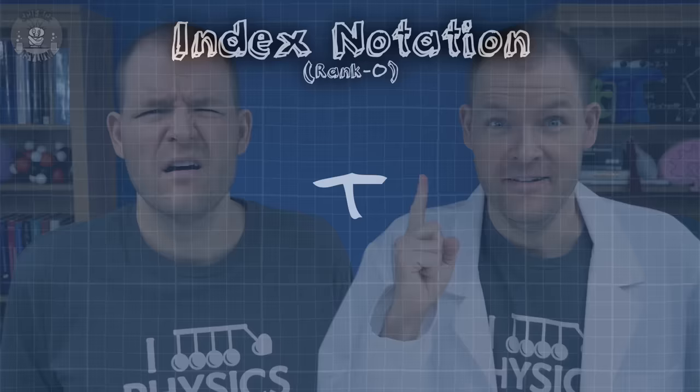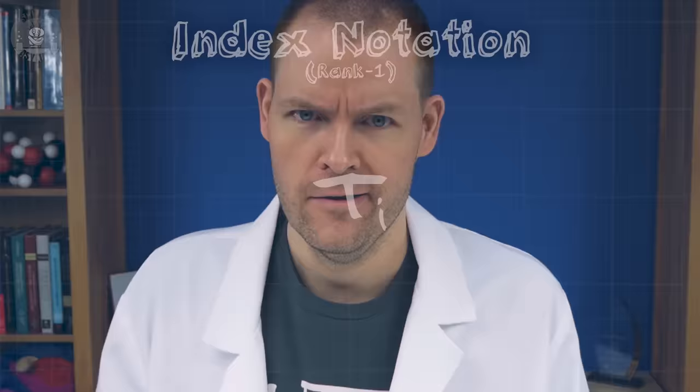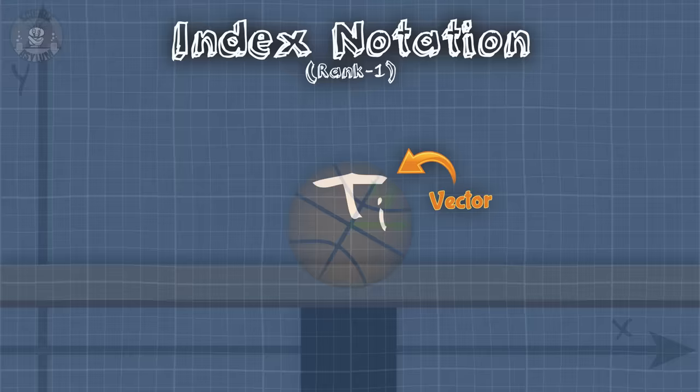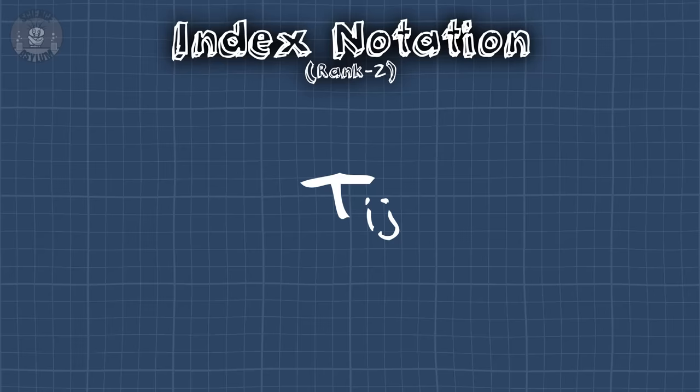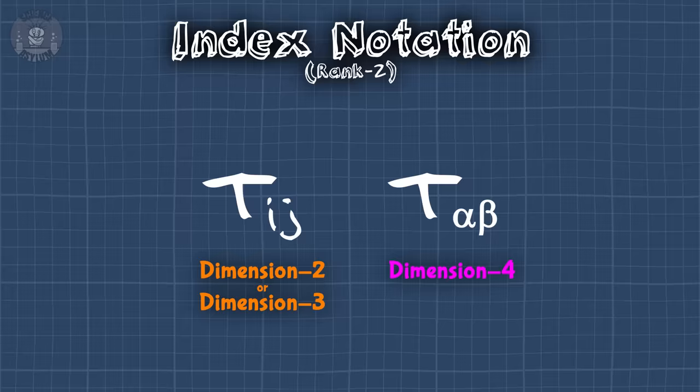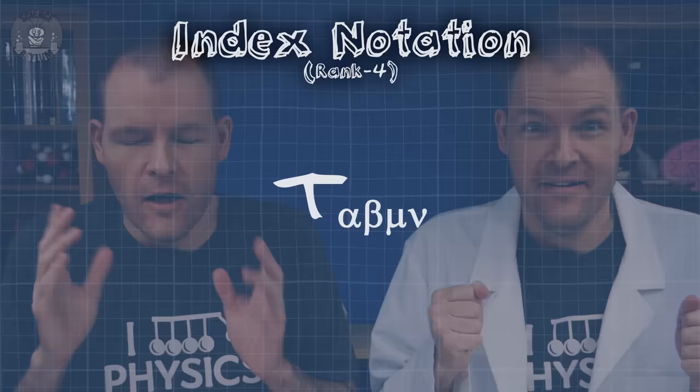Rank 0 means you don't need any information to find a component — that's just a scalar. Rank 1 means we only need one piece of information, one index — that's just a vector, like the velocity of a ball across a table. Rank 2 means two indices. Traditionally, we use Latin letters for two and three dimensions and Greek letters for four dimensions, which helps make rank and dimension more obvious at a glance. Rank 3 means three indices. Rank 4 means four indices, and so on. But what makes them tensors? How they transform.